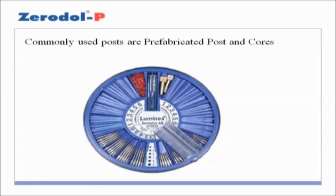Prefabricated posts are typically made of stainless steel, nickel-chromium alloy, or titanium alloy. They are very rigid and, with the exception of titanium alloys, very strong. Because they are round, they offer little resistance to rotational forces. This is not a problem if adequate tooth structure remains, but if minimal tooth structure remains, anti-rotation features must be incorporated into the post preparation with slots or pins.